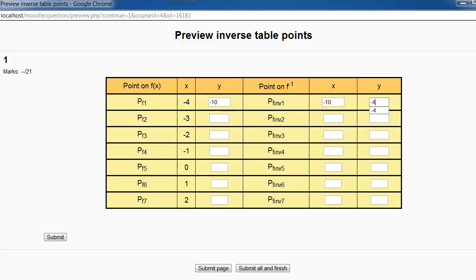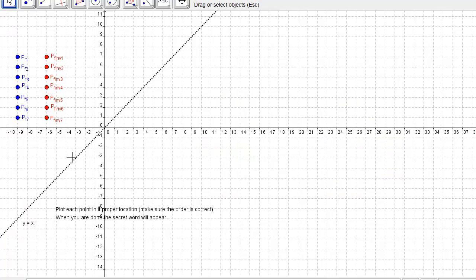We're going to continue in that fashion. When you're completely done, what you're actually going to do after you've filled in the table of points is plot these points on this GeoGebra applet. Drag each point to its proper location, so I know that when x was negative 10, the output was negative 4, and there is my first point on the function.